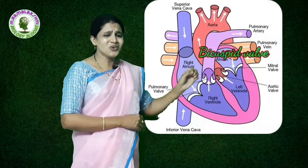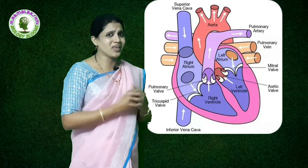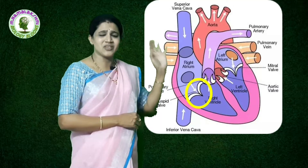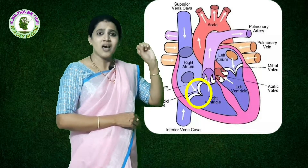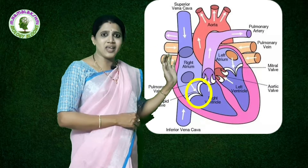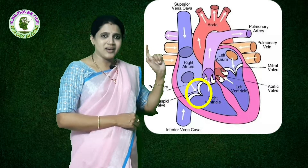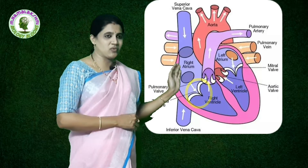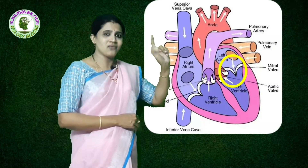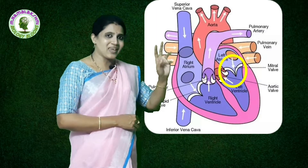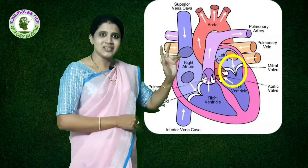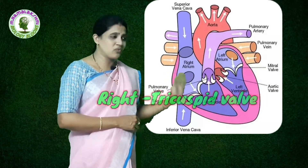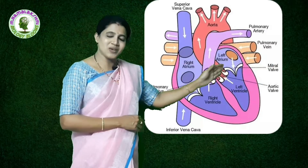The bicuspid valve is also called the mitral valve. To remember which valve is where: 'Right' has five letters — an odd number — and 'tri' also has an odd number of letters, so the right side has the tricuspid valve. 'Left' has four letters — an even number — and 'bi' has two letters, also even, so the left side has the bicuspid valve.